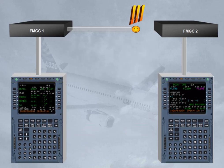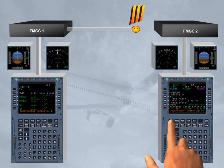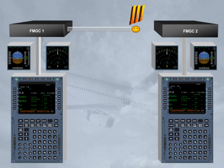In independent mode, each FMGC drives its own FG, Autopilot Flight Director, its own EFIS (PFD and ND), and its own MCDU. The crew must make the same entries on each MCDU in order to have the same guidance orders for both Autopilot FDs and the same information displayed on EFIS and on MCDU.